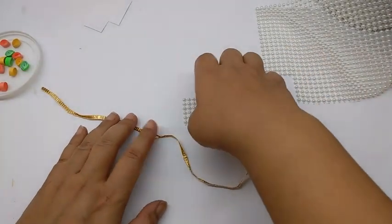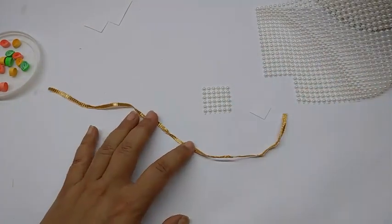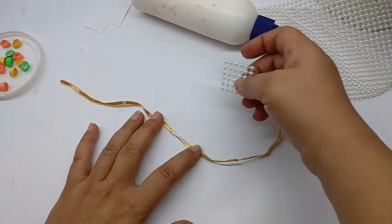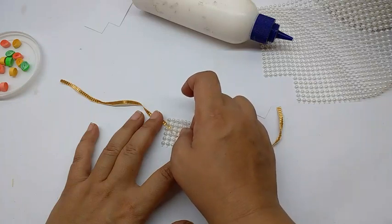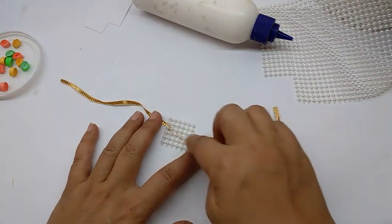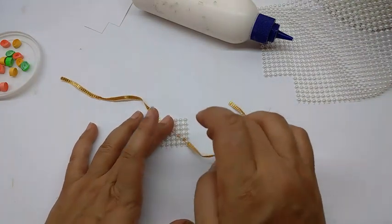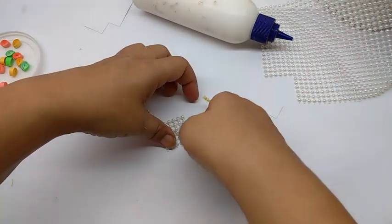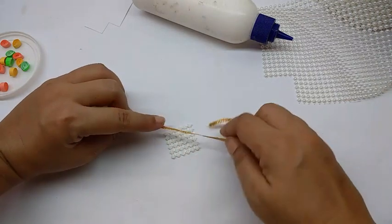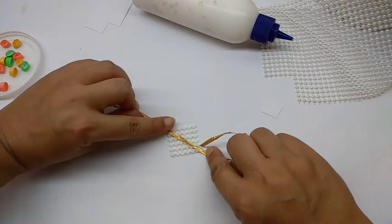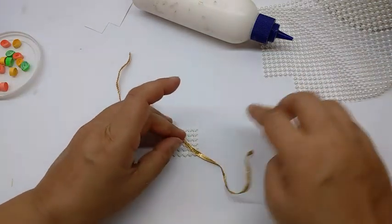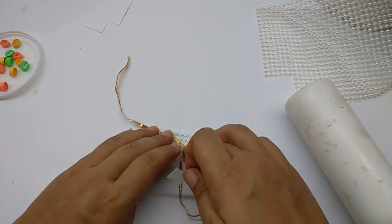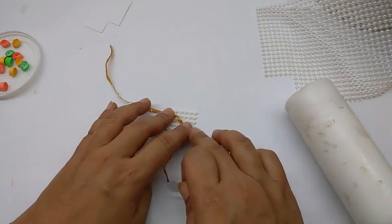You get a square like this. Take some plain paper also, cut out a small square. On this, just apply glue in the center and stick this pearl square on it. Just turn it around, take this paper, apply glue on this also and stick it on this.